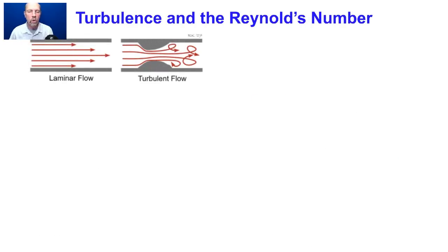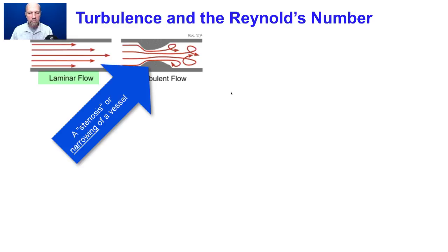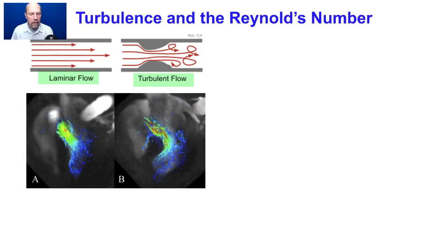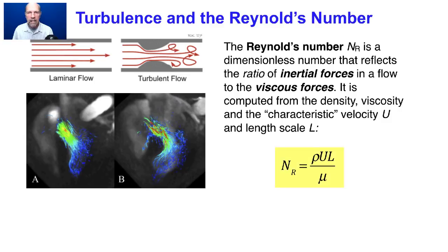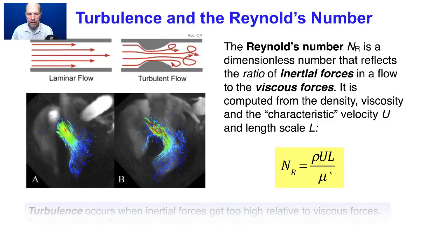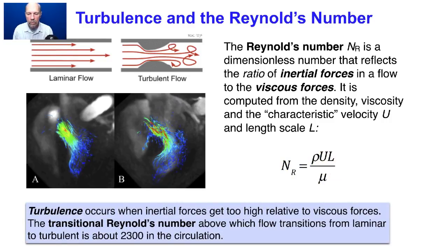Turbulence is a feature of flows also seen in the circulation. Most flow in the circulation is laminar, but occasionally, such as downstream of a stenosis or in the ventricles of the heart and around valves, the flow can become turbulent. The Reynolds number NR is a dimensionless number reflecting the ratio of inertial forces to viscous forces, computed as NR equals rho U L over mu. Turbulence occurs when inertial forces get too high relative to viscous forces, and the transitional Reynolds number above which flow transitions from laminar to turbulent is about 2300 in the circulation.